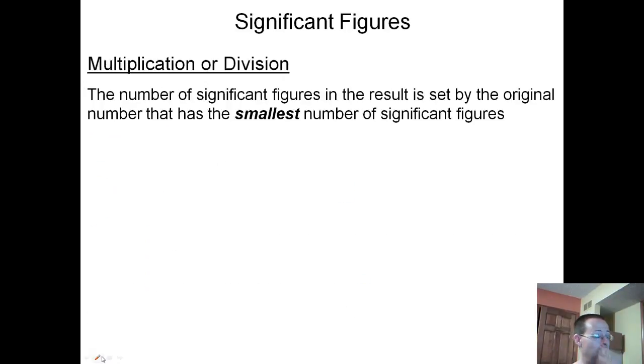Multiplication or division: the number of sig figs in the result is set by the original number that has the smallest number of sig figs. If we look at this number, how many sig figs does it have? They're all non-zero, so this has 3. This number has 5. So our answer, this is what your calculator is going to give you, has to have 3 significant figures. I'm going to keep the 1, the 6, and the 5. Which means I don't need any of these. Is the 3 going to do anything to my 5? It is not. So our answer is just 16.5.